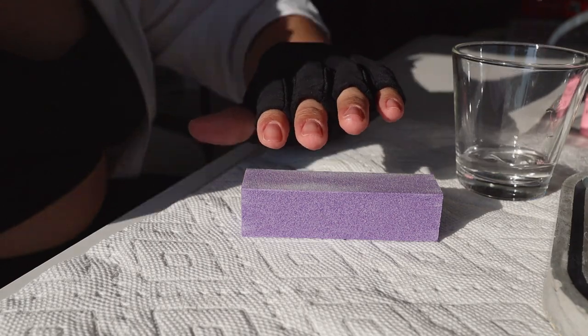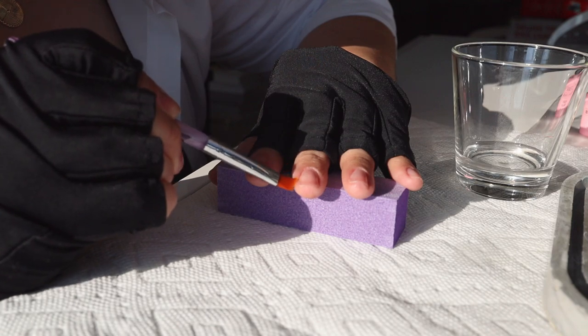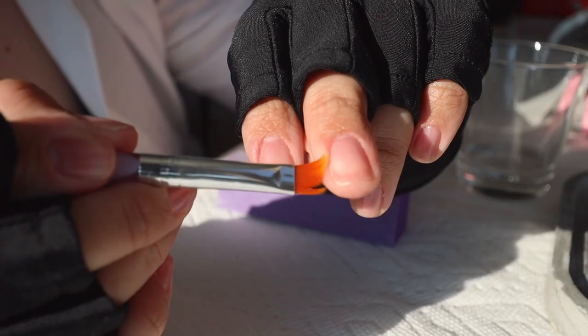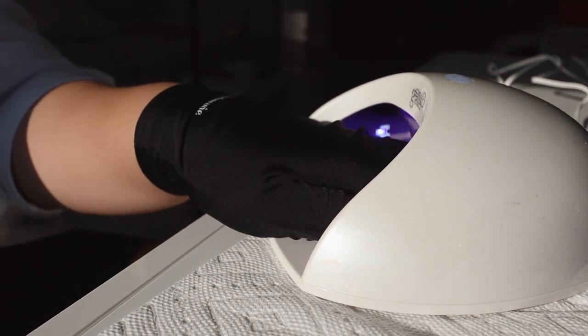Then I dipped the nail brush in some acetone and cleaned off any excess gel that caught onto my skin. If you leave any gel on your skin, this will cause your nails to prematurely peel off. I then cured the base coat for 45 seconds.